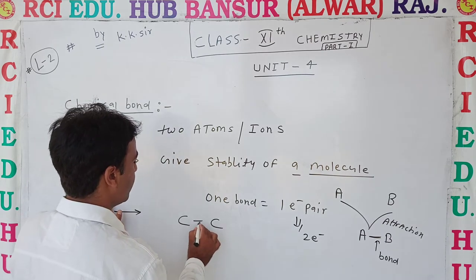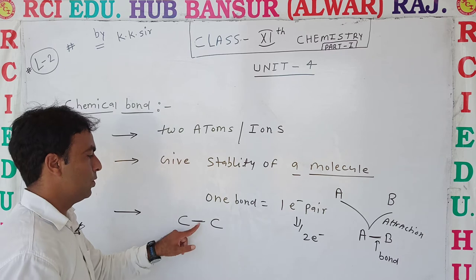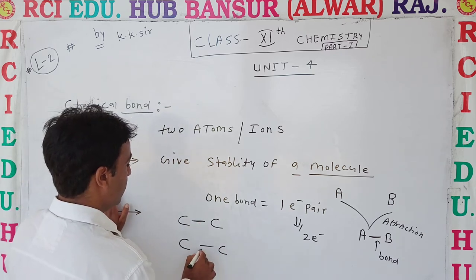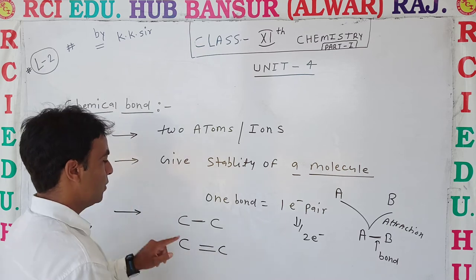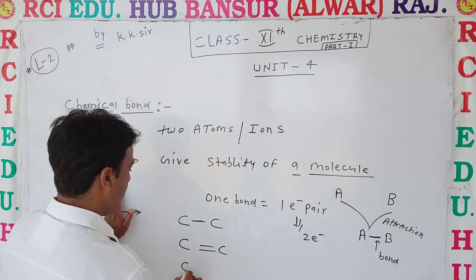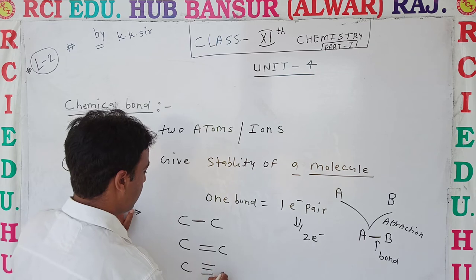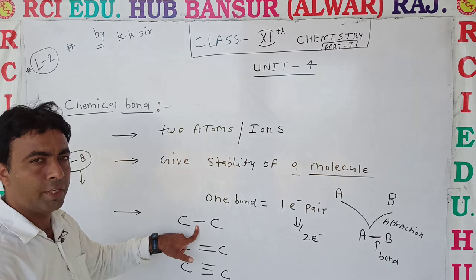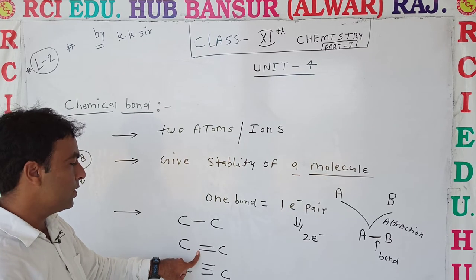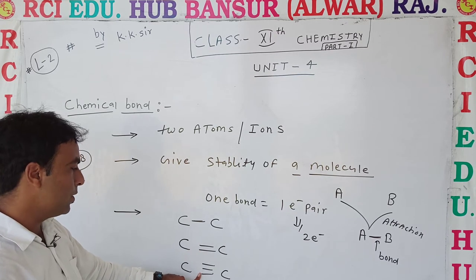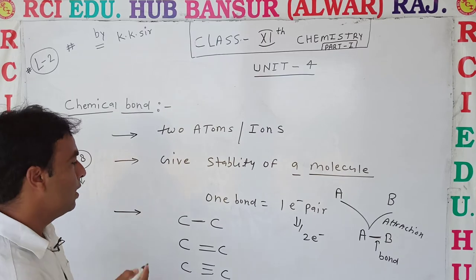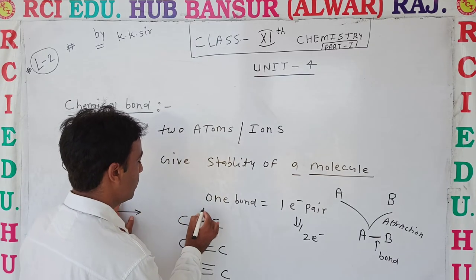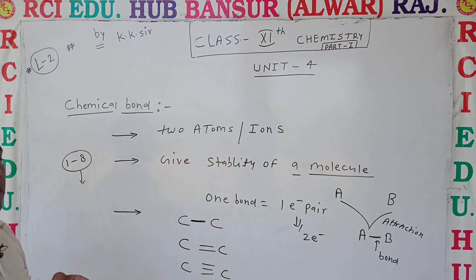Carbon has four valence electrons, so four bonds form. A single carbon-carbon bond is called a single bond, represented by one line. Two lines between carbons is called a double bond. Three lines between carbons is called a triple bond. So: one line — single bond, two lines — double bond, three lines — triple bond.